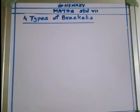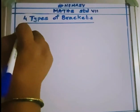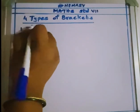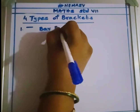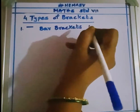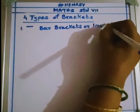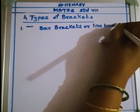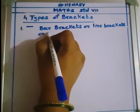Hello students, welcome to the channel. In math today we are going to learn different types of brackets. There are four types of brackets. First one: bar brackets, also called line brackets or vinculum brackets.